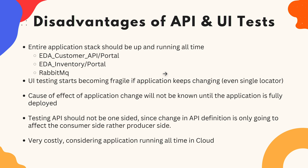The cause and effect of a change in the application will only be known once the application is fully deployed, in the case of both UI tests and API tests — which is another pain we always encounter. Also, testing an API should not be just one-sided, since a change in the API definition is only going to affect the consumer side of the application, rather than the producer side — meaning the API itself will not be affected, but the consuming application will be.